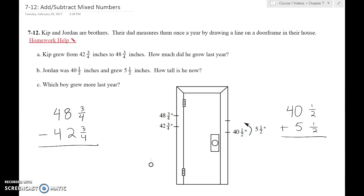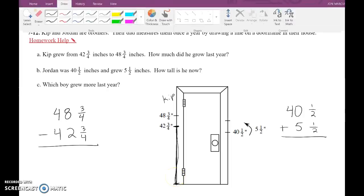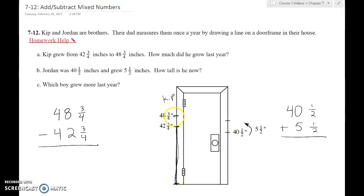So Kip, I'm going to say this is Kip's side over here. All right, and he grew from 42 and 3/4ths inches, so this is how big he already was. This is how big he already was, and he grew to this amount here. And so you're wondering, what's the difference? How much more did you grow?